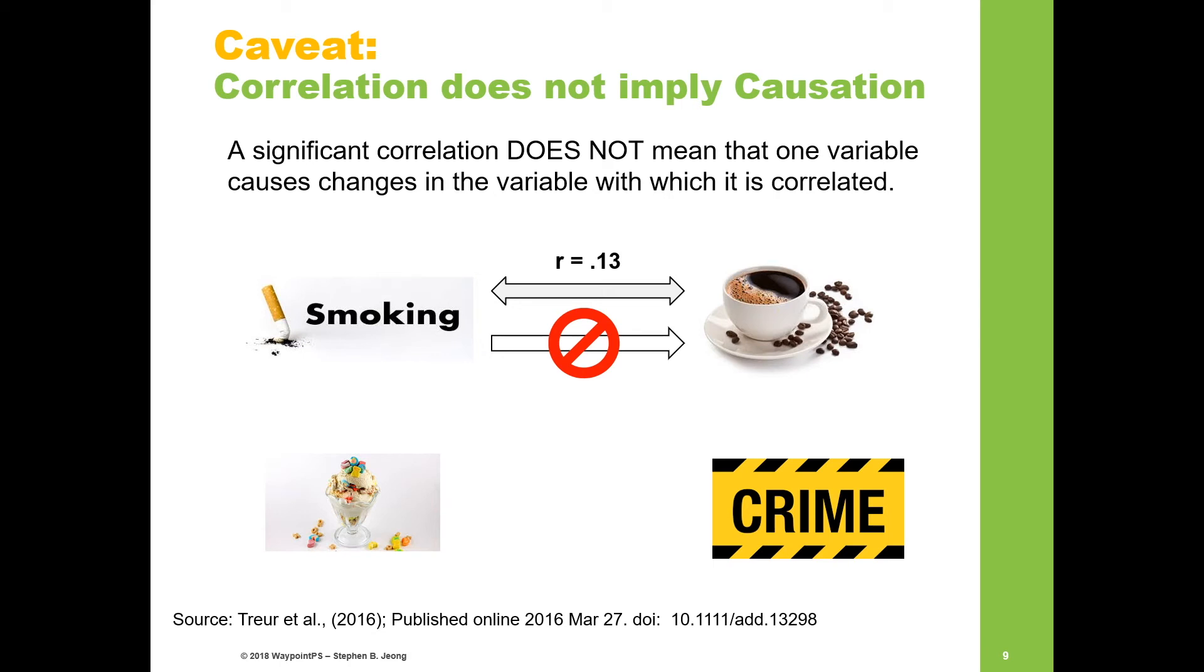A similar example: ice cream consumption and crime. There is a fairly strong positive correlation, maybe 0.56. We would see that as ice cream sales increase, crime rate also increases. But we can't say that eating ice cream will lead to higher crime rate or vice versa. There's really a third variable, which is outside temperature. When it's hot out, people tend to go outside. When people are outside interacting with one another, there are more opportunities for crime, and they also consume higher amounts of ice cream.